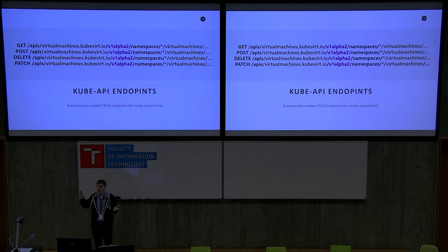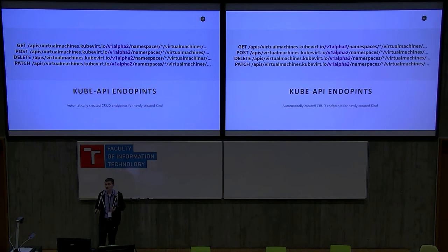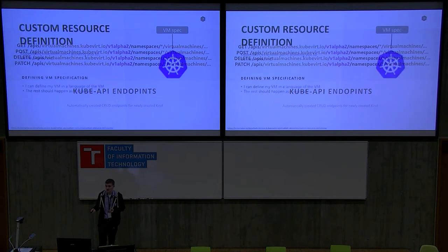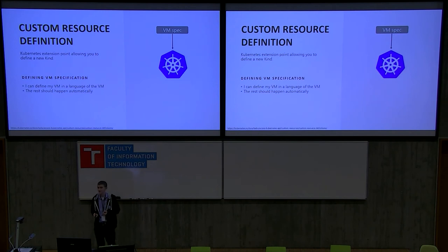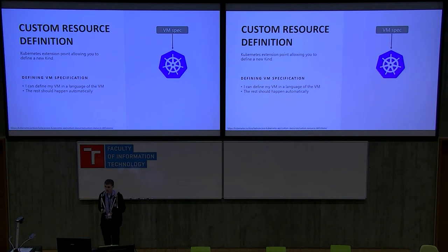This is how the endpoint will look — automatically generated, very simple. You have the namespace, the version, and then the name for each virtual machine. So you have custom resource definitions, you register a new spec file defining your VM, and now your cluster knows about virtual machines.